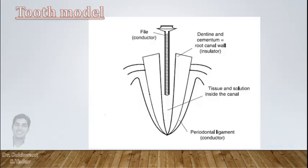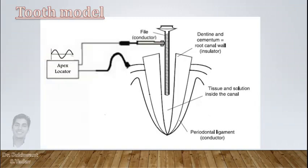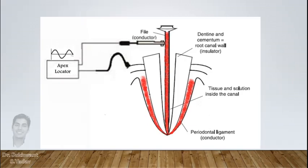When a file is inserted in root canal and attached to voltage in apex locator, periodontal ligament and stainless steel file act as conductors. As file proceeds in canal to apex, both conductors touch each other and circuit completes. This leads to flow of current in periodontal ligament and resistance recorded.